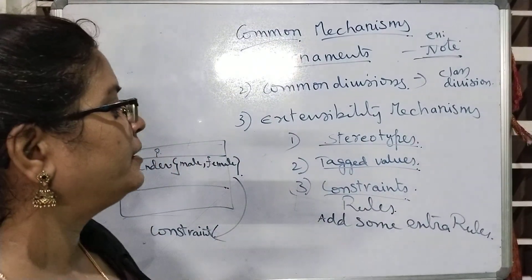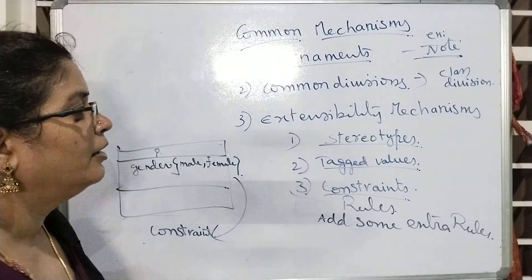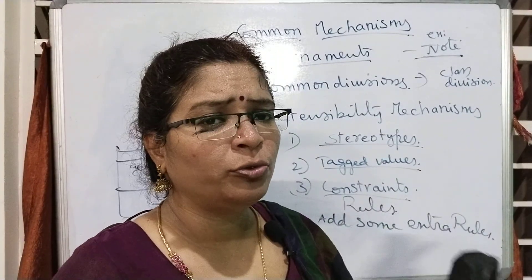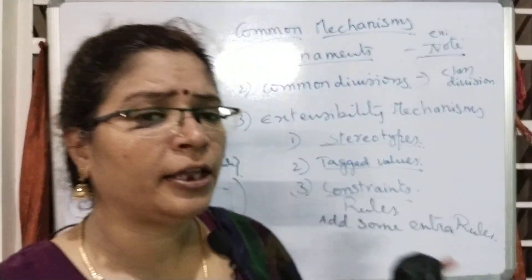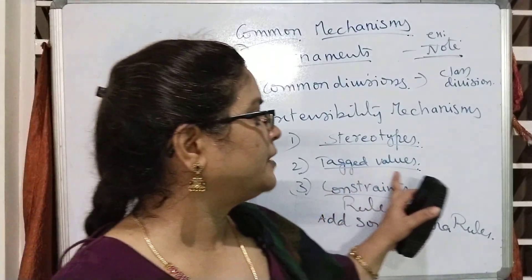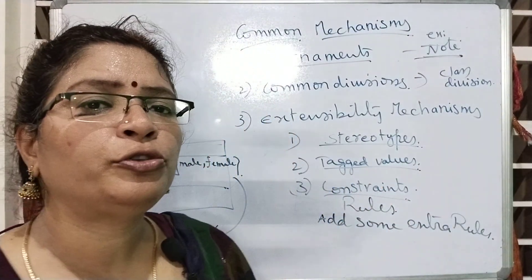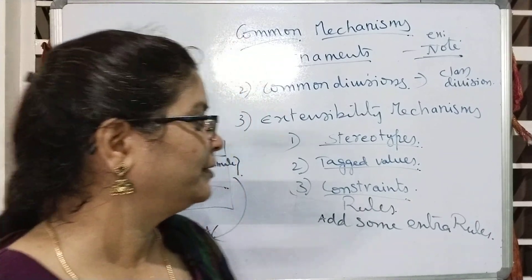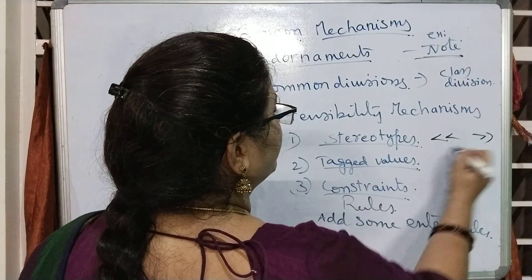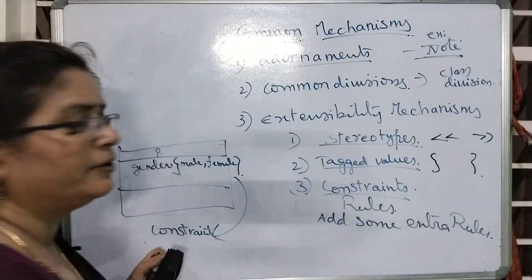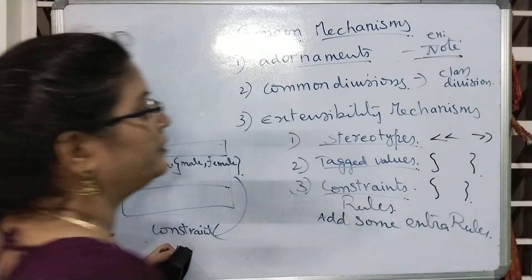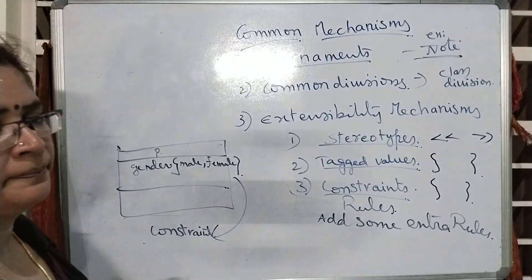The next one is extensibility mechanisms. The extensibility mechanisms are: stereotypes, tagged values, and constraints. Stereotypes can be used along with the dependency relationship like 'include' and 'extend.' Tagged values can be used to add some values to the attributes within the class. Stereotypes are represented with guillemets, tagged values are represented with curl braces, and constraints can also be represented with curl braces.